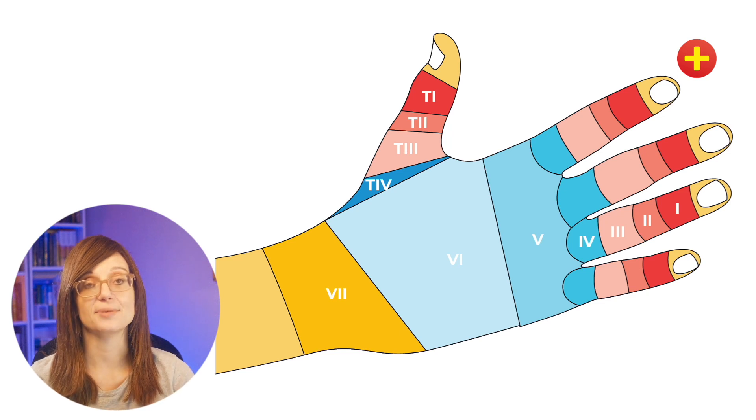So injuries in zone one, the DIPJ, and zone three, the PIPJ, cause some unique injury patterns and we'll talk about them in a separate video.